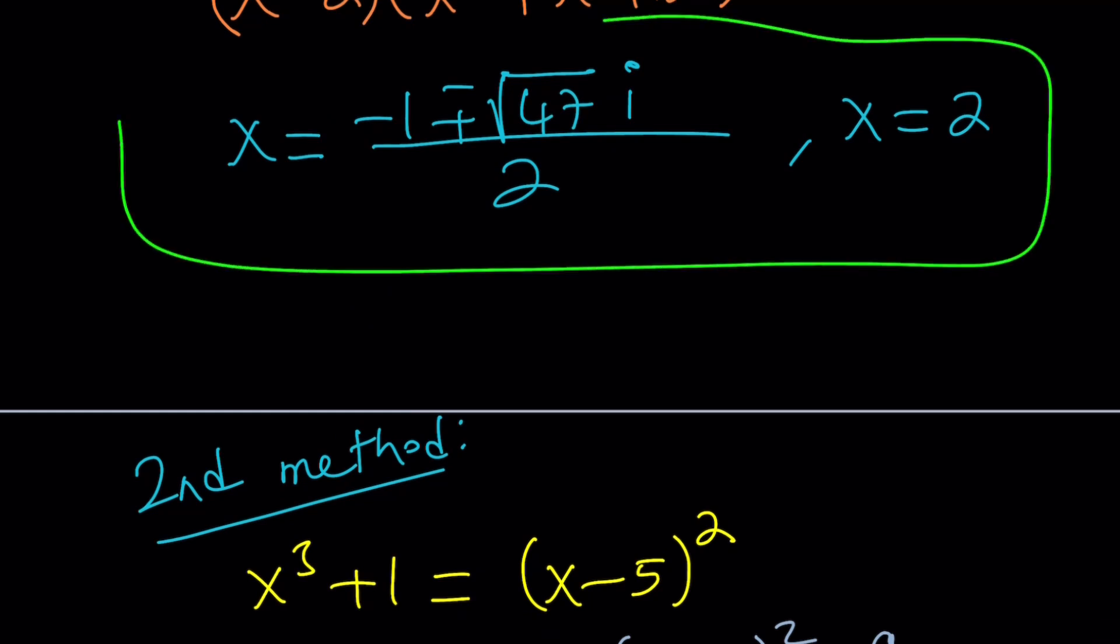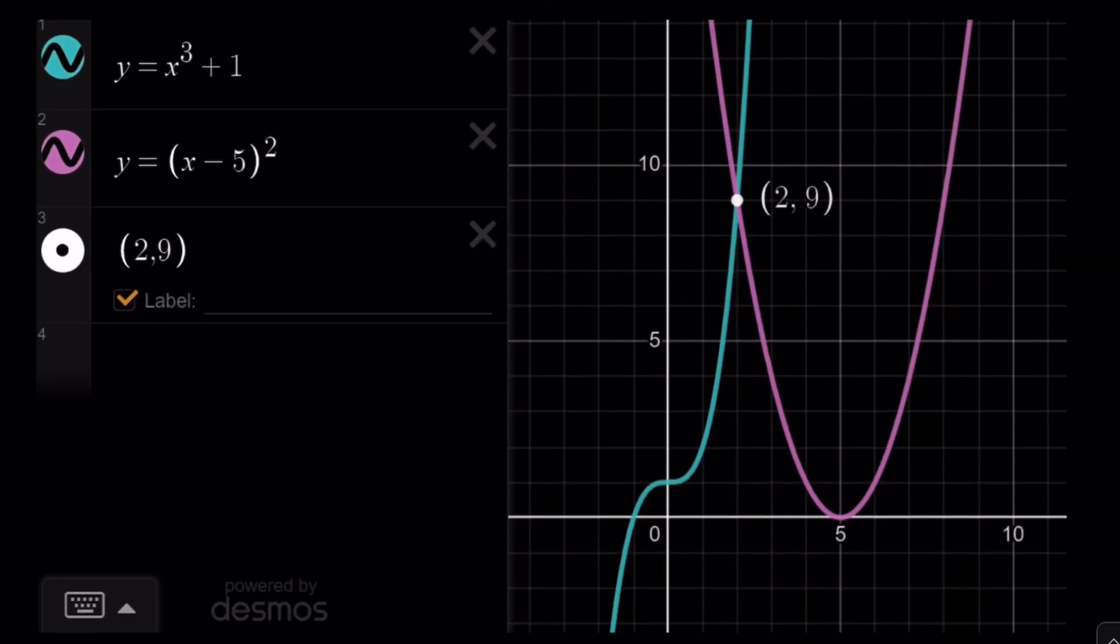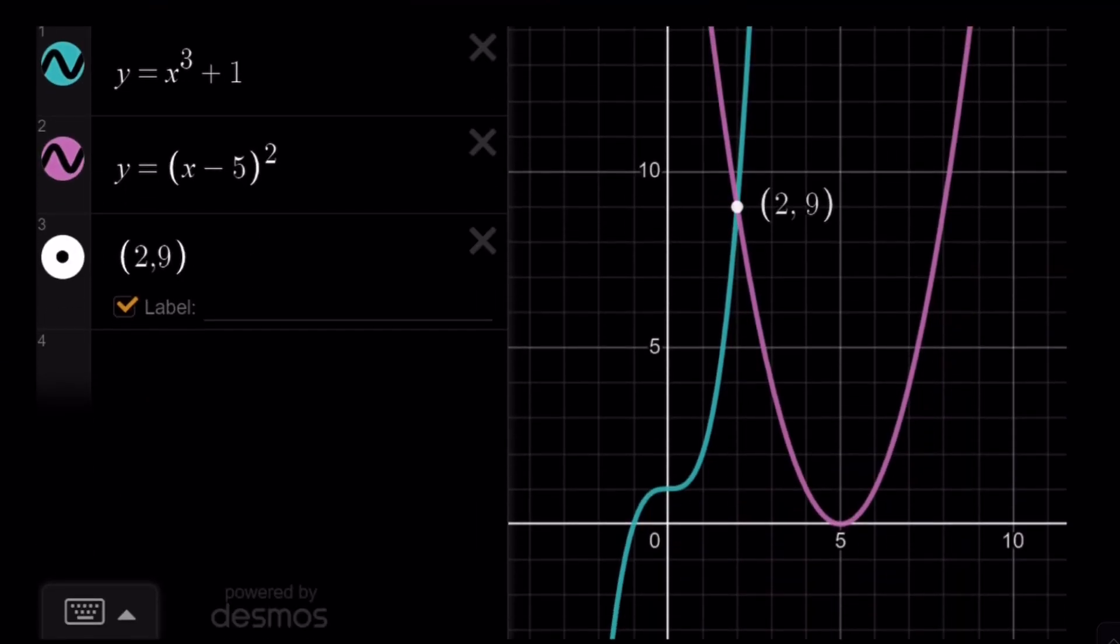All right. So let's go ahead and take a look at the graph real quick. If I made it, hopefully I did. And yay, I did. Great. So as you can see here, we don't see the complex solutions. We only see the real one, and that is x equals 2. So we have a cubic function intersecting a parabola at a single point.